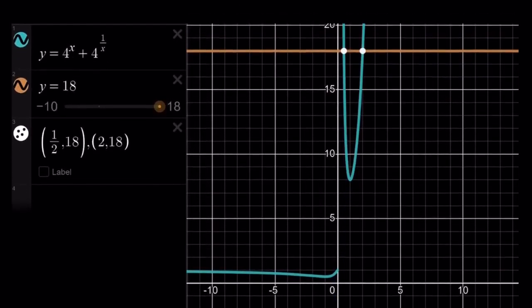Now, I graph both of these functions. And, by the way, the graph of 4^x + 4^(1/x) is a very interesting graph because it kind of behaves really weird on the left-hand side. So, here's the idea.